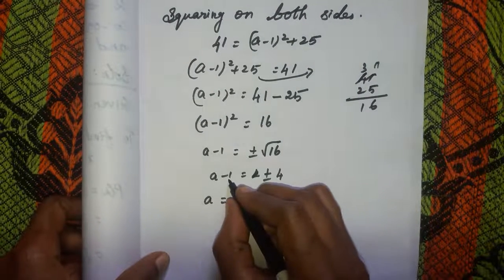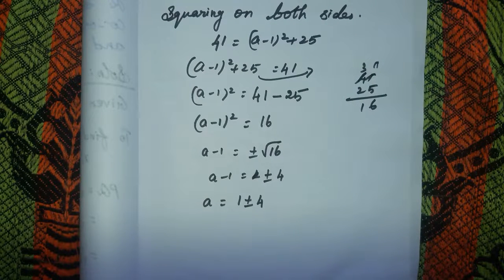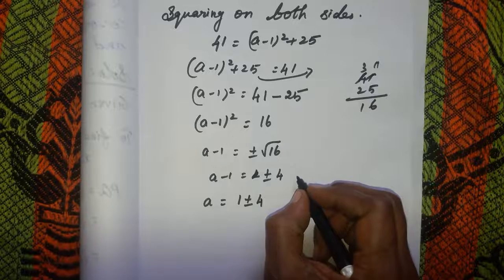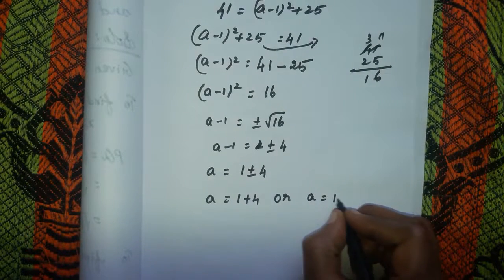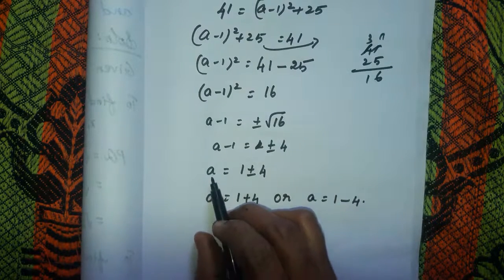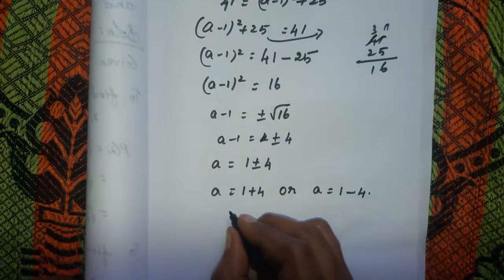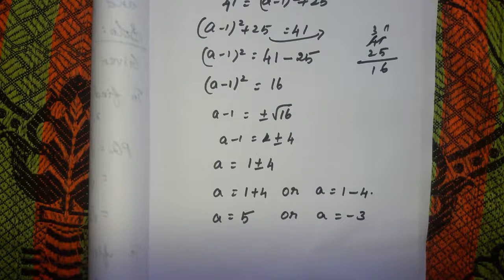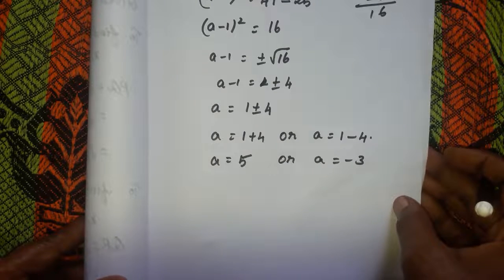A - 1 = plus or minus 4, so A = 1 plus or minus 4. Therefore A = 1 + 4 = 5 or A = 1 - 4 = -3. The value of A is 5 or -3. Any doubt in this question?